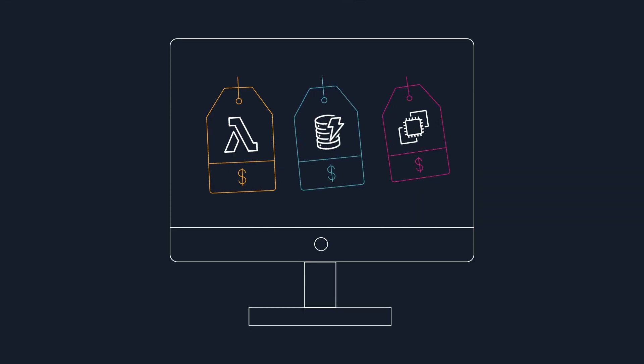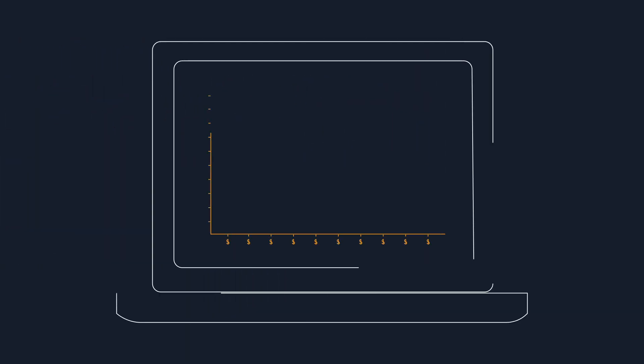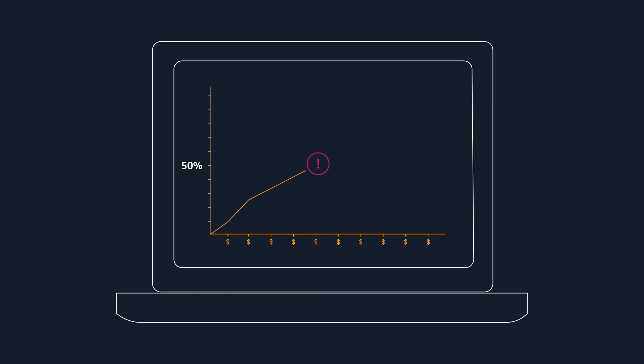The one to start with is a cost budget. When setting up your cost budget, you can pick any of the AWS provided dimensions or any custom dimensions you created through tagging. You can create a budget that alerts when the spend for a specific service or resources that share a specific tag exceed either a set dollar amount or a percentage of your target spend. You can also configure multiple alerts on your budget, like having a first alert sent when you reach 50% of your spend threshold and a second alert at 80%.